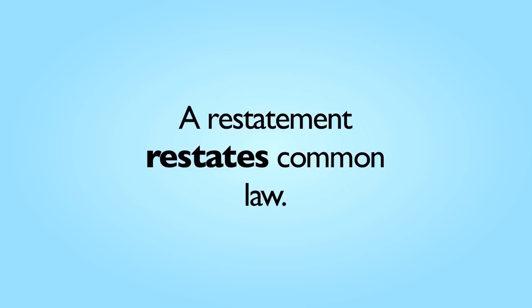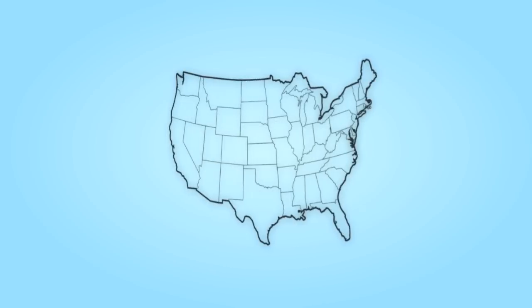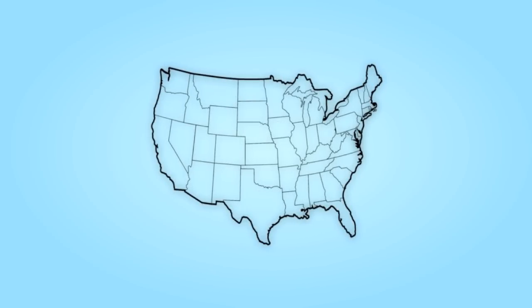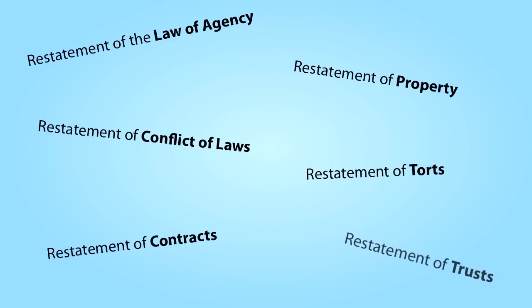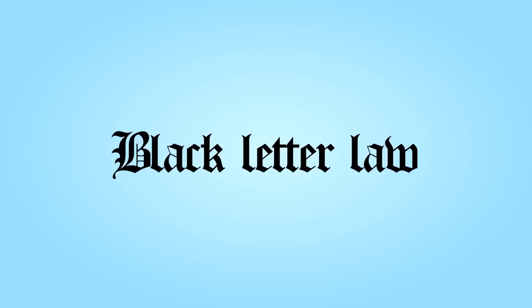The official purpose of each Restatement is to restate the common law based on a survey of cases from all state jurisdictions. Each Restatement addresses a particular area of law, such as contracts or torts. The goal was for each Restatement to accurately summarize the current state of the law in each area — that is, to state the black letter law.